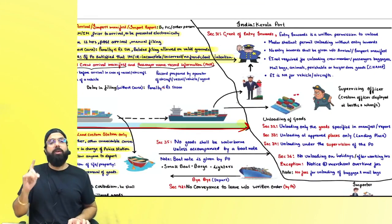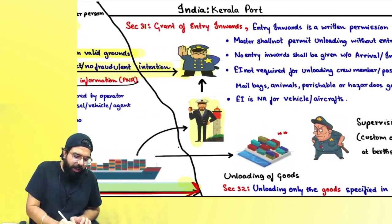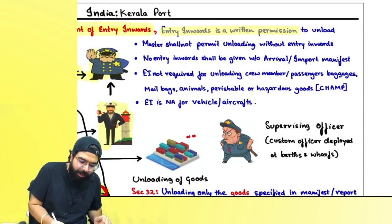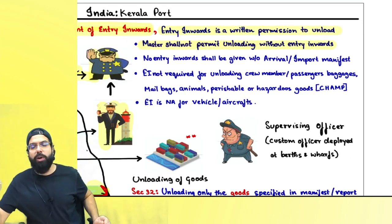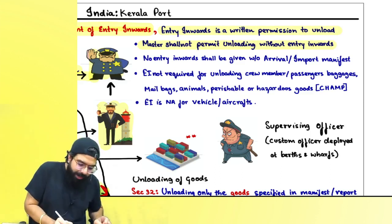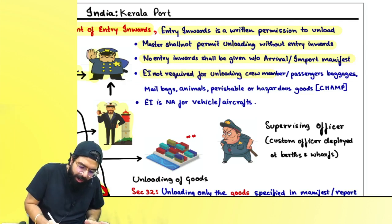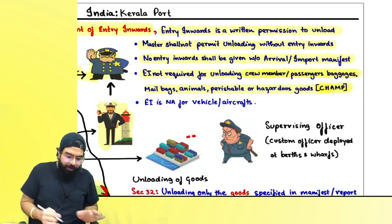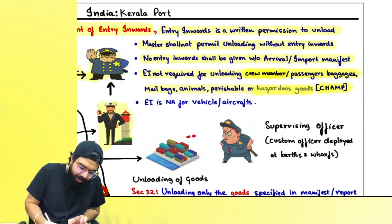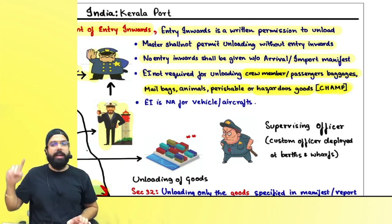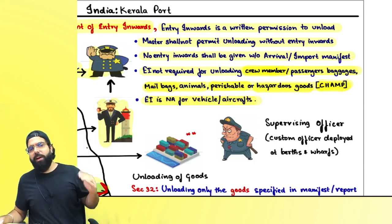Section 31 talks about entry inward, which is only applicable in case of vessel. The person in charge must go to the proper officer and ask for an entry inward — a written permission to unload. A master of the ship shall not allow unloading unless entry inward has been granted. Entry inward will not be given if you have not filed an import manifest. Entry inward is not required for CHAMP: Crew member/passenger baggage, Hazardous goods, Animals, Mail bag, and Perishable goods. Entry inward is also not required for vehicle or aircraft.